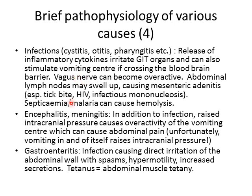Septicemia and malaria especially can cause hemolysis, which as mentioned can cause abdominal pain. Encephalitis and meningitis are often accompanied by nausea and vomiting — in addition to the effects of infection, they can raise intracranial pressure, which stimulates the vomiting center. As the abdominal contents contract to cause vomiting, that itself causes pain. Vomiting in turn raises intracranial pressure further, creating a vicious cycle.